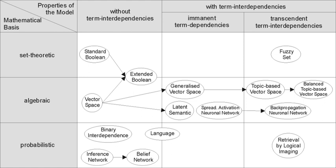Awards in the field include the Tony Kent Strix Award and the Gerard Salton Award. Top leading IR research groups include the Center for Intelligent Information Retrieval at the University of Massachusetts Amherst, the Information Retrieval Group at the University of Glasgow, Information and Language Processing Systems at the University of Amsterdam, the Information Retrieval Group at Tsinghua University, and the Information Storage, Analysis and Retrieval Group at RMIT University.